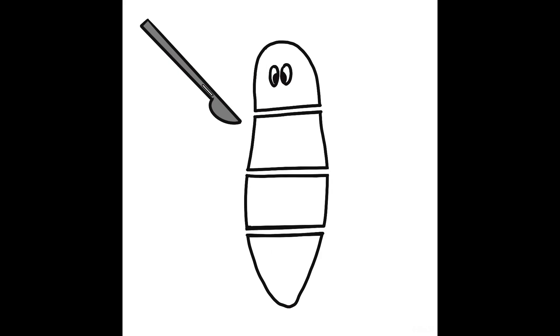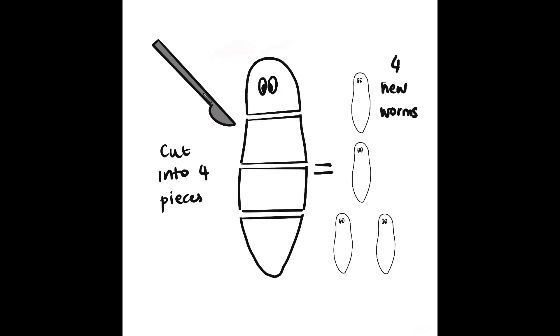In our lab, we study a flatworm called a planarian that has an immense ability to regenerate. Cut the worm into multiple pieces, and in as little as seven days, you have an equal number of newly regenerated worms.